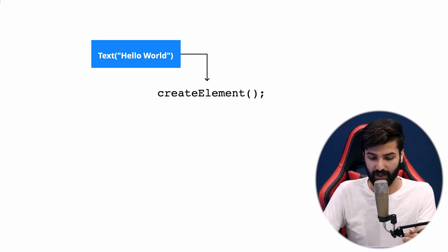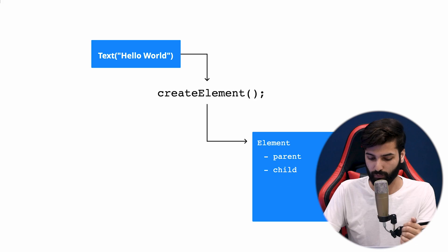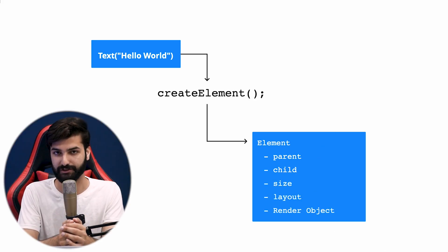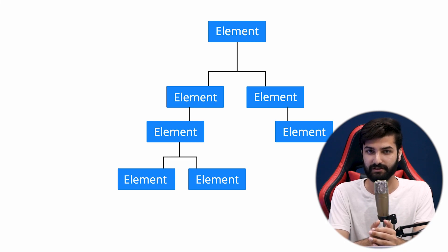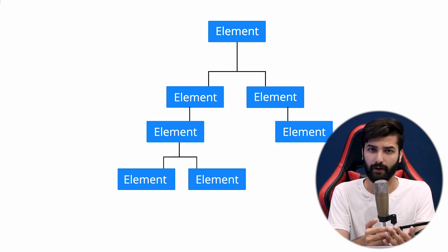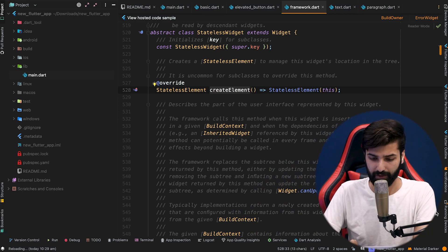When we create a widget like a Text widget, it asks the Flutter framework to create an element — as we saw in the widget implementation with the createElement method. An element then has all the information about the widget that it needs at runtime. For each widget in the widget tree, a corresponding element is created by the Flutter framework, responsible for keeping track of where that widget is, what its parent and children are, managing its life cycle, and handling any necessary updates.